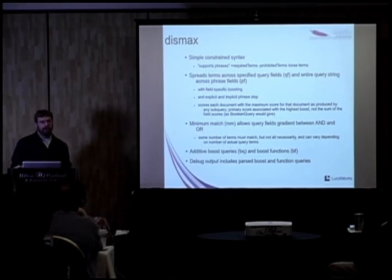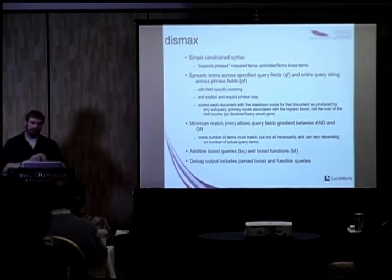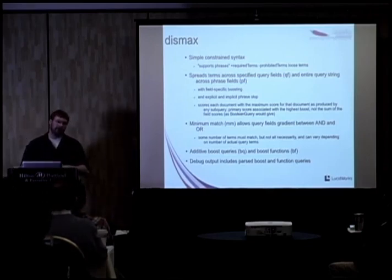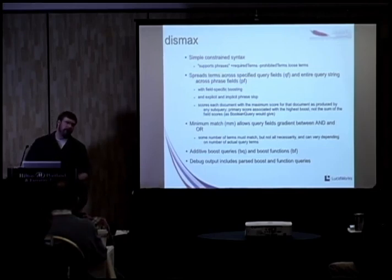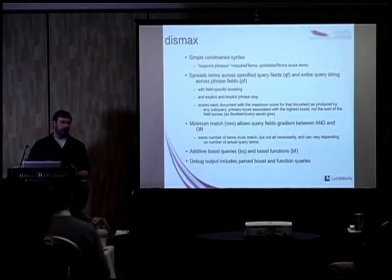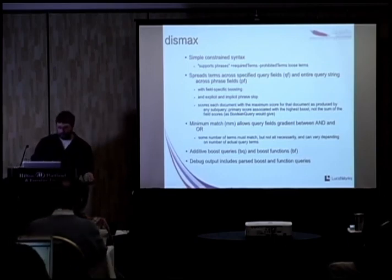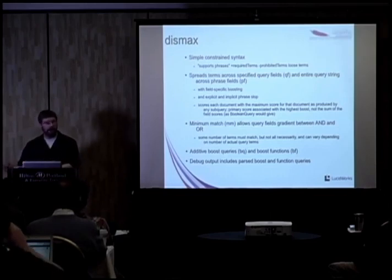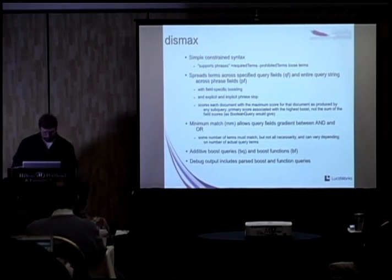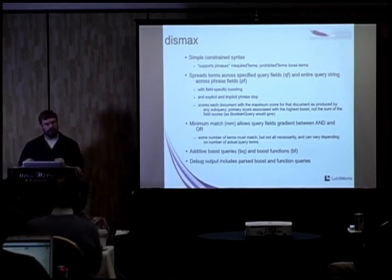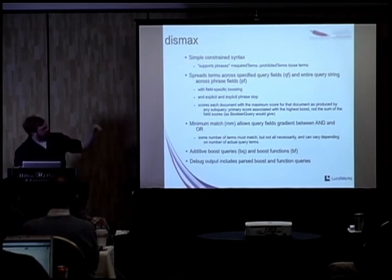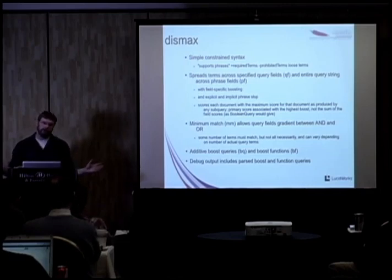One of the main reasons people use the Dismax parser is that it spreads query terms across multiple fields and allows you to weight different fields. For example, if you're indexing articles with a title and body text, you can say title caret five and body caret one, and it will spread the query terms across those fields with that boosting. Dismax actually stands for disjunction maximum — it disjoins query terms across many fields and the score is the maximum produced by all the subqueries.